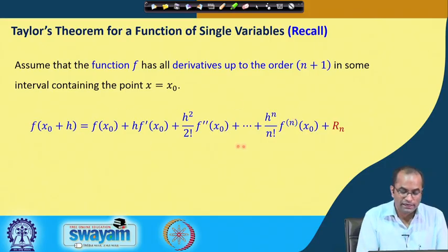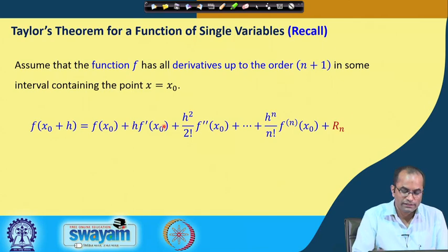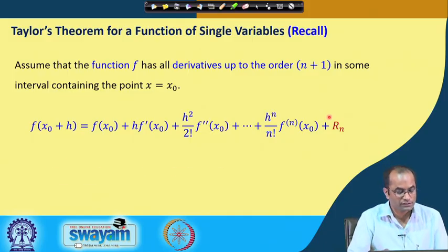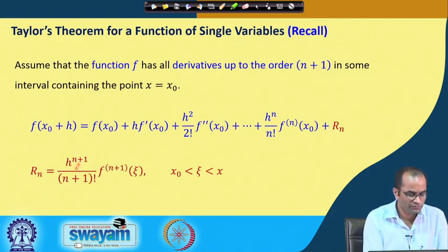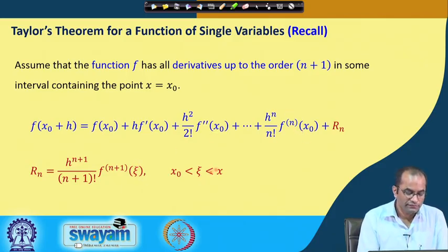These higher-order derivative terms form the Taylor's polynomial, and the remainder — the error term — is denoted by h^(n+1) / (n+1)! times the (n+1)th derivative evaluated at some point ξ which lies between the two points.